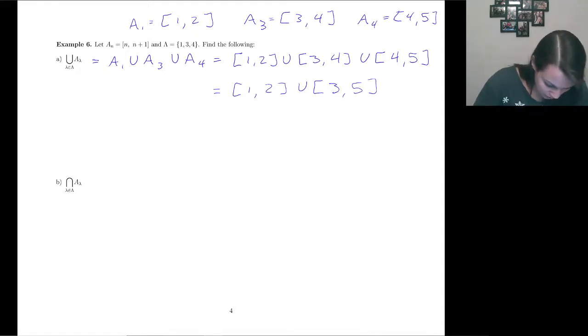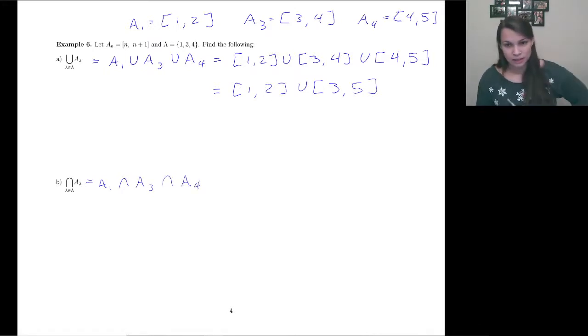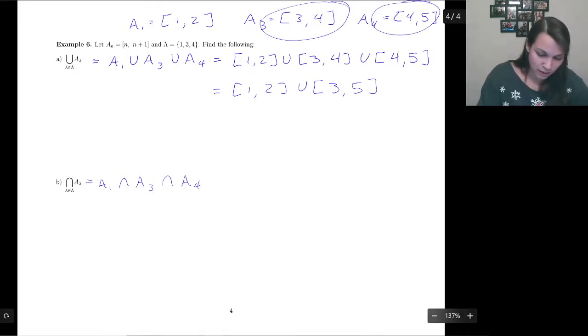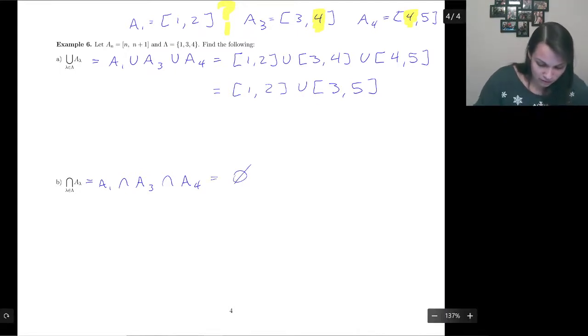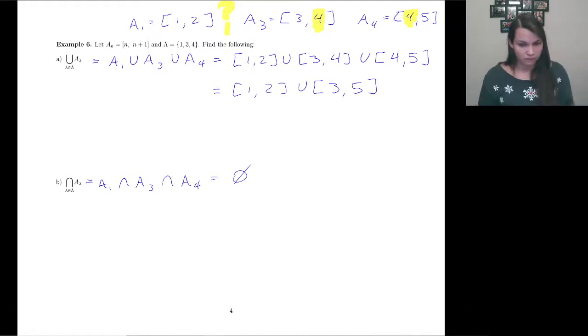Okay, so intersection. Let's say we're going to do the intersection between A_1, A_3, and A_4. So this is when we want to know what all of our intervals have in common. So we look here and we look here and we can say, oh, they have this four element in common. And then we look here at A_1 and say, there's no four. So they don't have any elements in common at all. Their intersection is going to be the empty set.